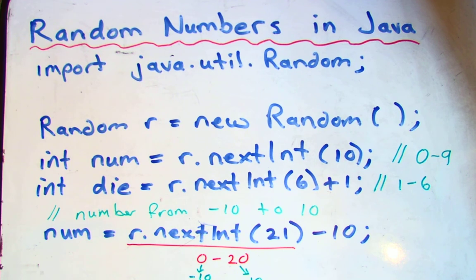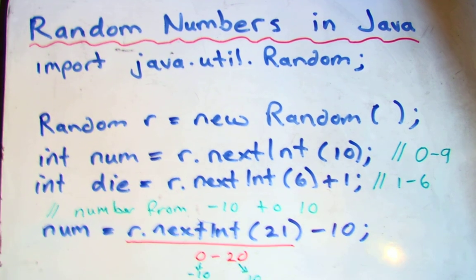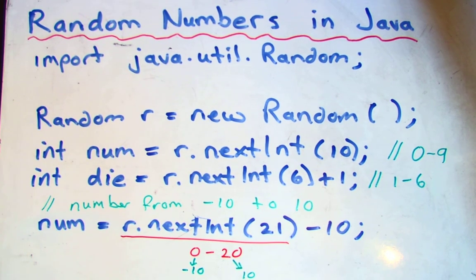So the high end becomes positive 10, the low end becomes, instead of 0, subtract 10, it becomes negative 10. So that would do it. So that's a brief introduction.